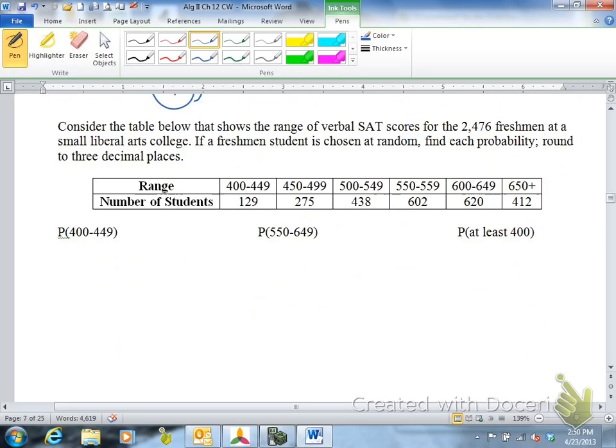The next question. We have a table below. It shows the range of SAT scores for 2,476 freshmen at a small liberal arts college. You have the different ranges of scores. So you have 129 that scored between 400 and 440. You have 412 that scored above 650 on the SAT. Probability that if you pick one student at random, probability they scored 400 to 440. So you have 129 possibilities for success out of the total that you have. I told you right here that the total is 2476.